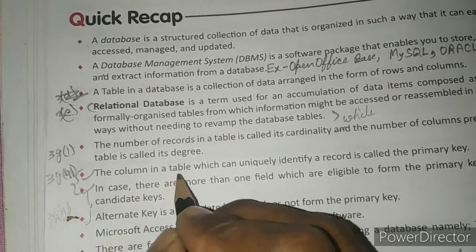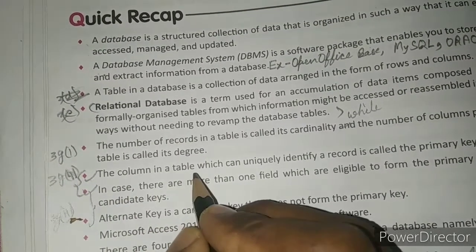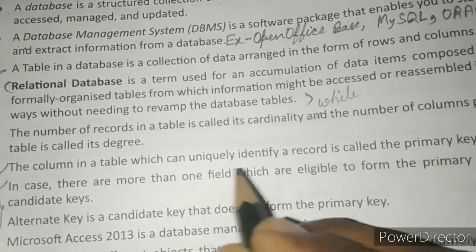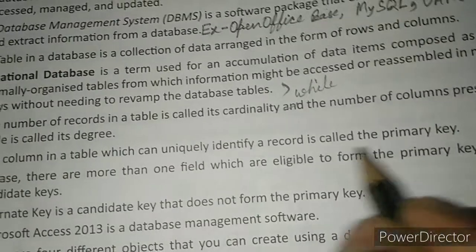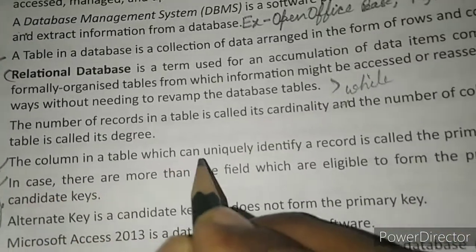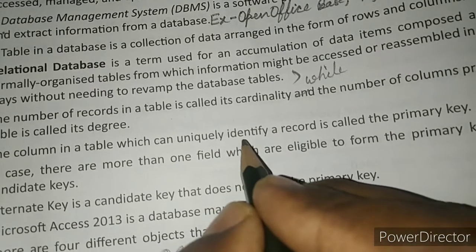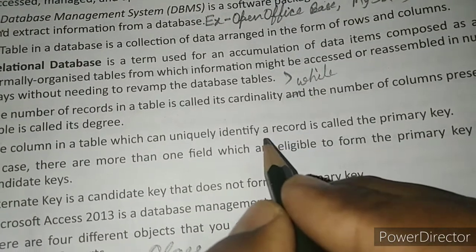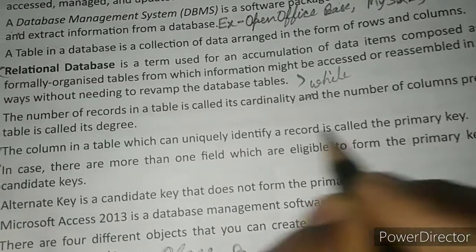Under this heading, write: the column in a table which can uniquely identify a record is called a primary key.